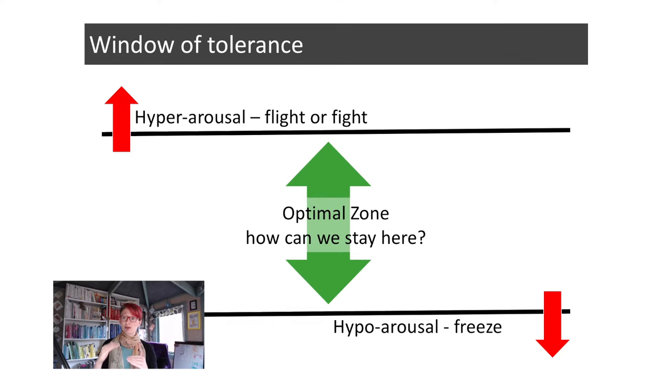In order to stay within our window of tolerance as far as possible each day, there are two key things we can do. One is to get a better understanding of what impacts where we are within our window of tolerance — so we try to avoid or manage those things differently. For example, if something makes us highly anxious, we might build in a breathing space afterwards. The other thing we can do is think about how to respond quickly if we feel ourselves tipping up into hyper-arousal or down into hypo-arousal.